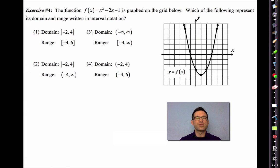Exercise number four. The function f(x) equals x squared minus 2x minus 1 is graphed on the grid below. Which of the following represent its domain and range written in interval notation? Well, take a look at the fact that there's arrows on that. What that means is that the graph just keeps going on and on and on, heading to the left, heading to the right forever. As well, notice that the minimum y value is negative 4, and then it just goes up forever. So our correct answer ends up being choice number three.